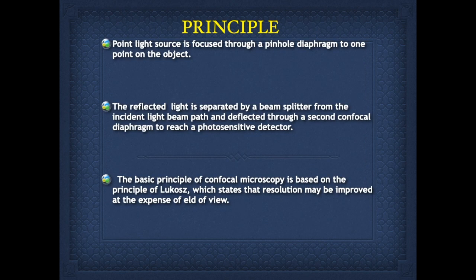A point light source is focused through a pinhole diaphragm to one point on the object. The reflected light is separated by a beam splitter from the incident light beam path and deflected through a second confocal diaphragm to reach a photosensitive detector. We shall be seeing this principle in action.